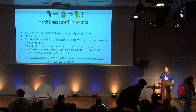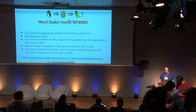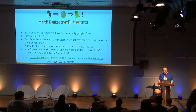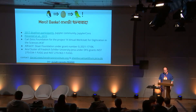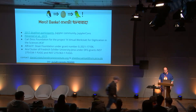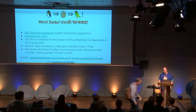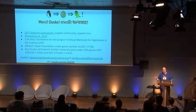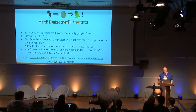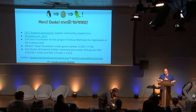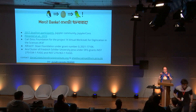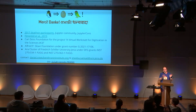Q&A: One attendee asked whether the pipeline accounts for data availability — for example, papers where data is available upon request. The short answer is no; it was a completely automated pipeline. They didn't look at individual readmes, acknowledgements, or data availability statements. However, this could be added: if there's a certain pattern to search for in a data availability statement, they could add this, since they have the full text.